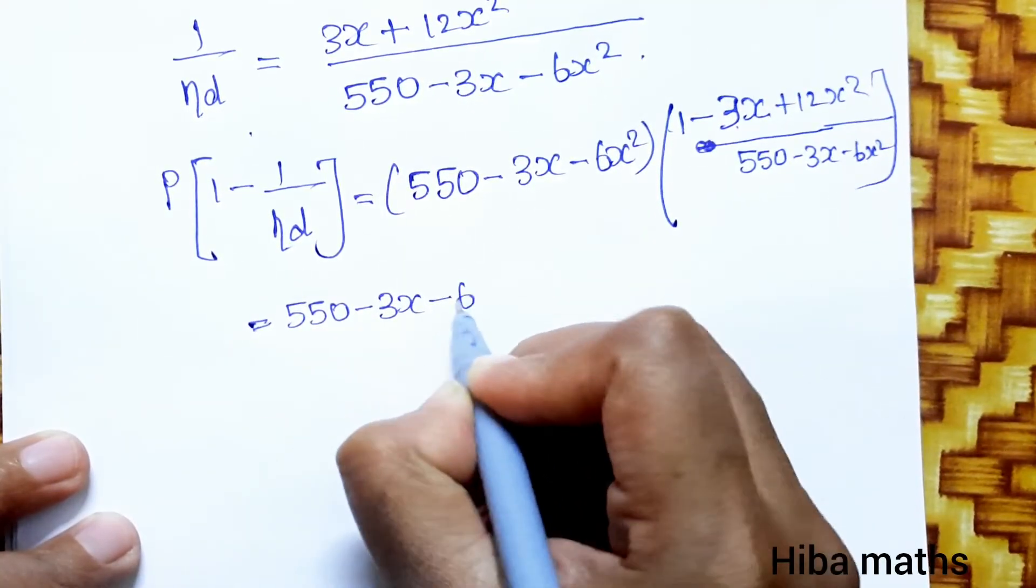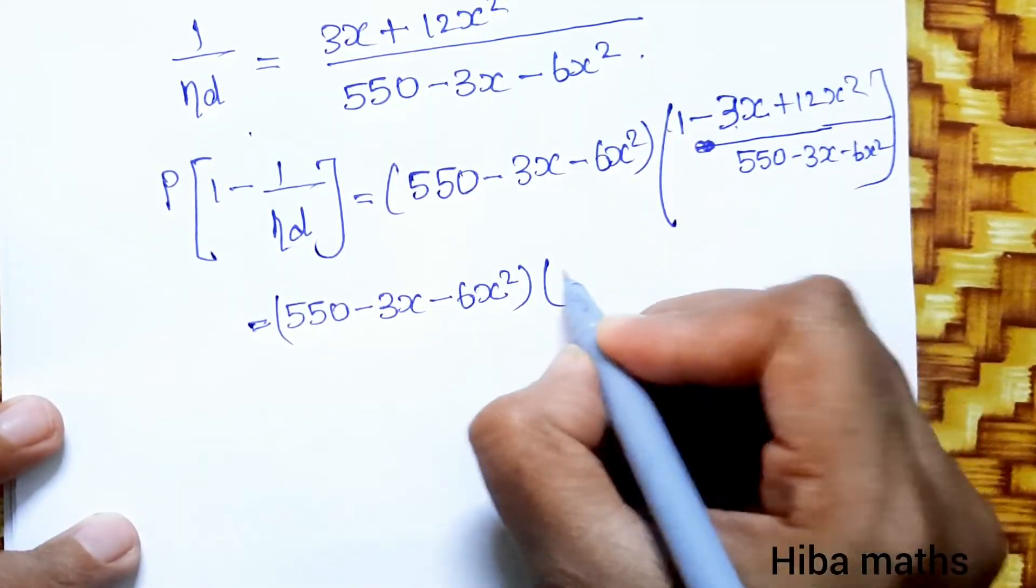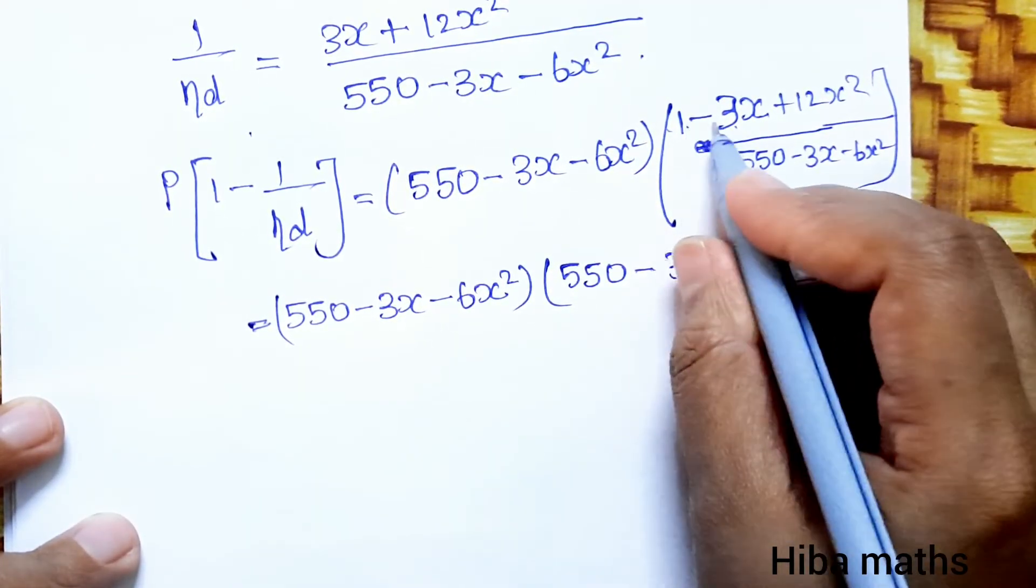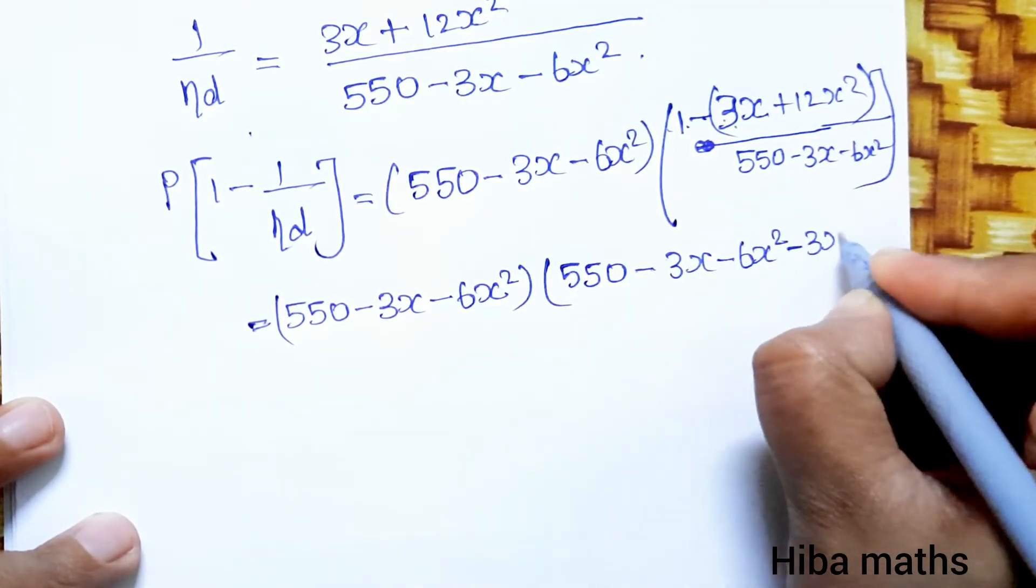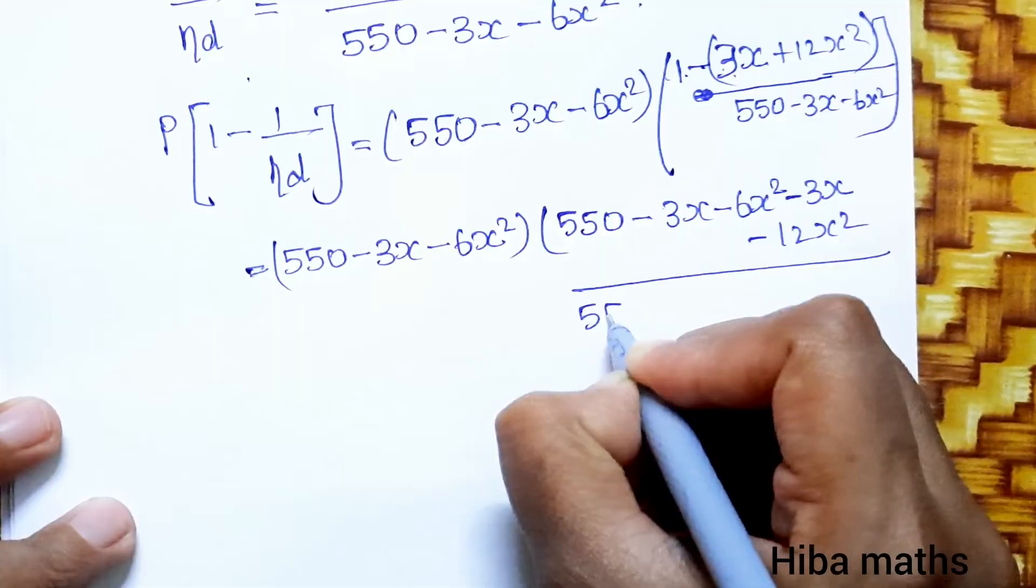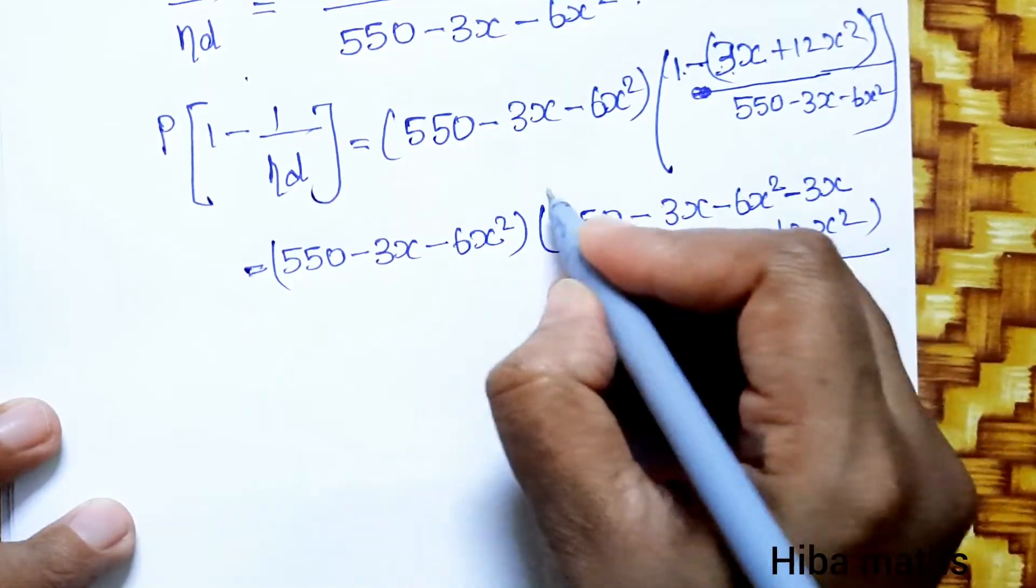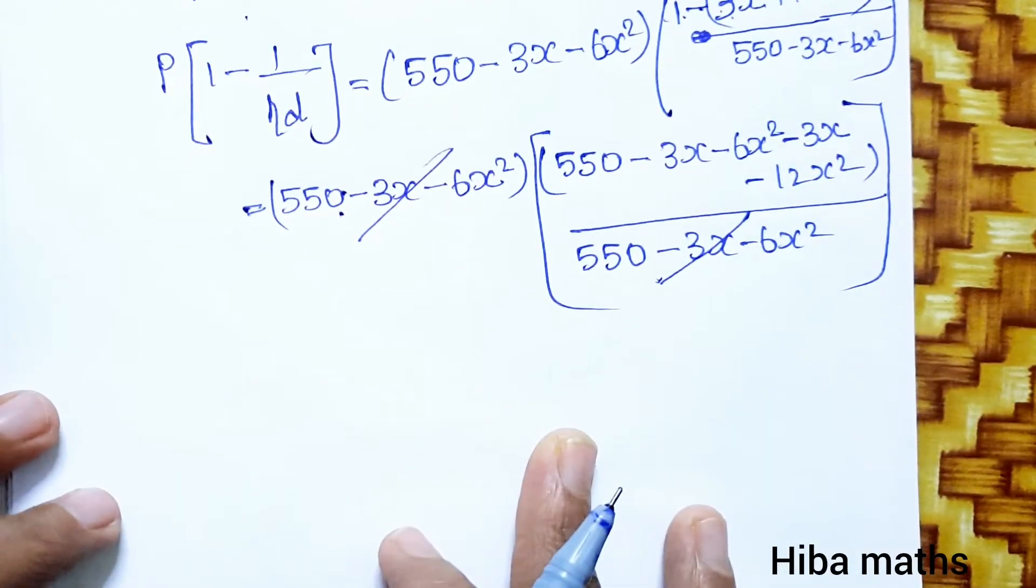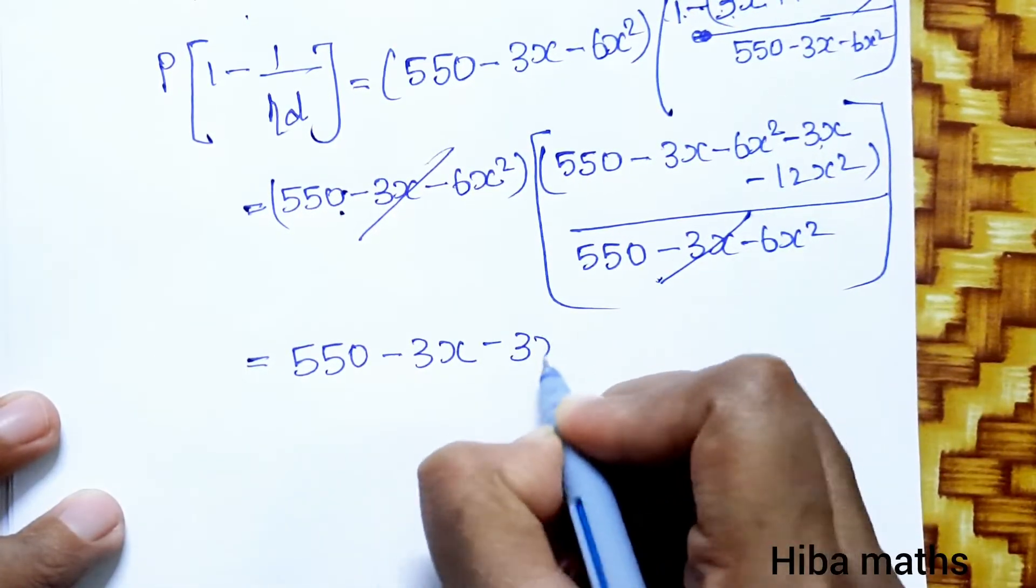This cancels. The balance is 550 minus 3x minus 6x square minus 3x minus 12x square divided by the same denominator. When we simplify, these two are equal to 1. We cancel.